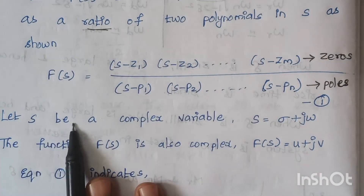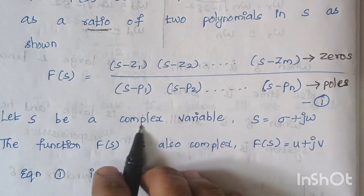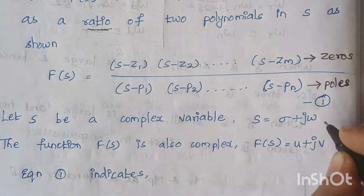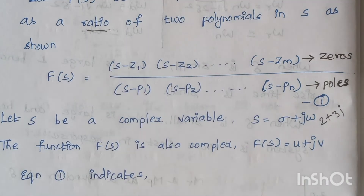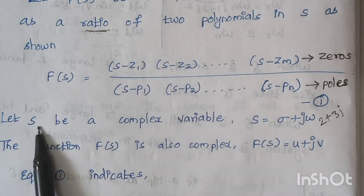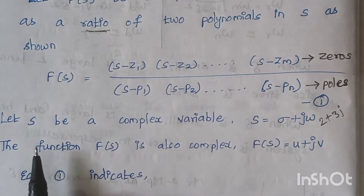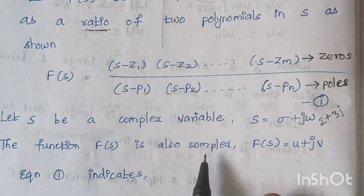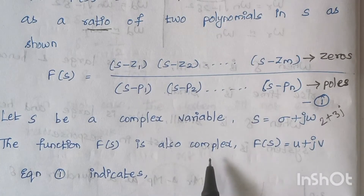Now, s is a complex variable — what is meant by complex variable? It has both a real term as well as an imaginary term. So here s is written as sigma plus j omega. For example, we can take 2 plus 3j — that is a complex variable. Then the function f of s is also complex. We substitute s into the function, and that function f of s is represented as u plus jv. So s is a complex variable and f of s is also a complex variable.